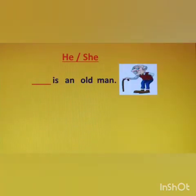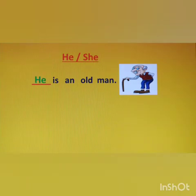Blank is an old man. Children, what shall we write here — 'he' or 'she'? Yes, we will write 'he', because here we are talking about an old man, and for a man we use 'he'. Let's read it: 'He is an old man.'